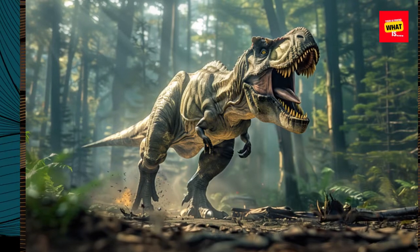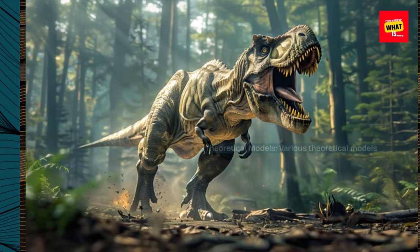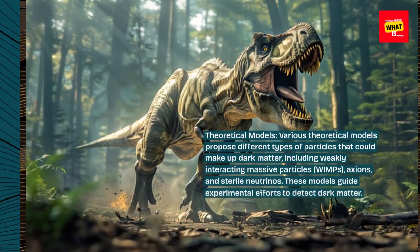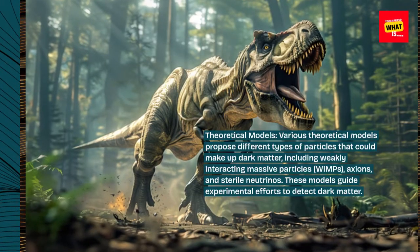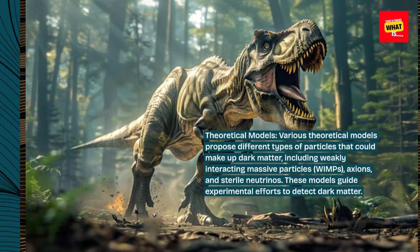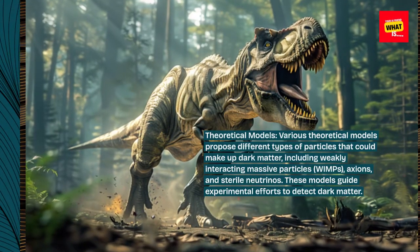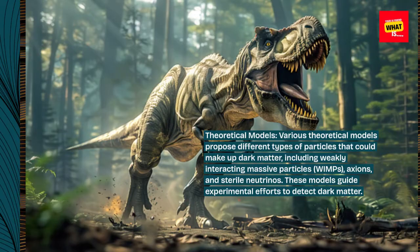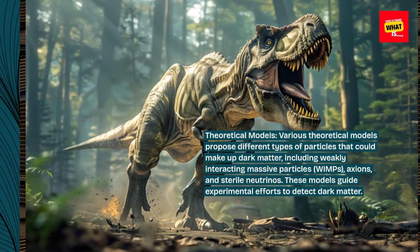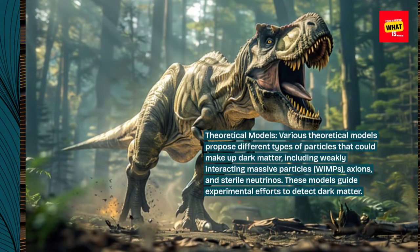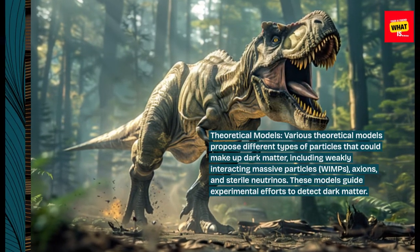Various theoretical models propose different types of particles that could make up dark matter, including weakly interacting massive particles (WIMPs), axions, and sterile neutrinos. These models guide experimental efforts to detect dark matter.